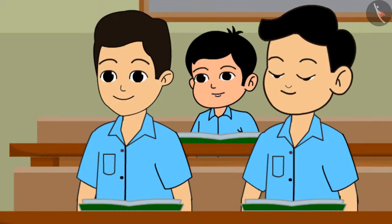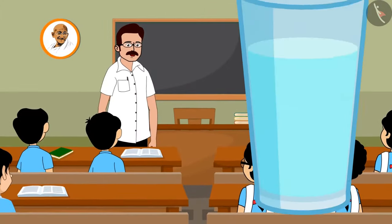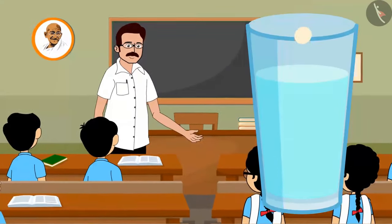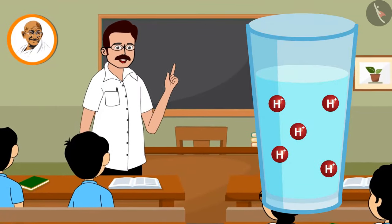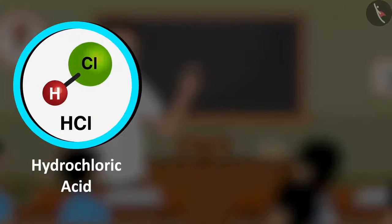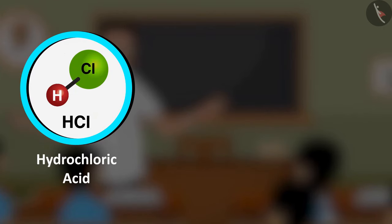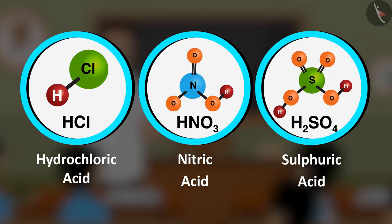Sir, can you please explain in detail? When an acid dissolves in water, it releases hydrogen ions. Acids have hydrogen in them — like HCl (hydrochloric acid), HNO3 (nitric acid), H2SO4 (sulfuric acid), etc.